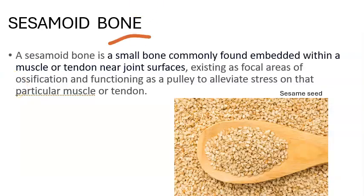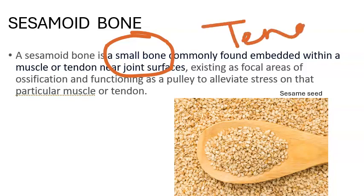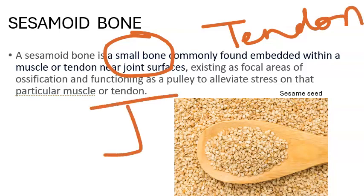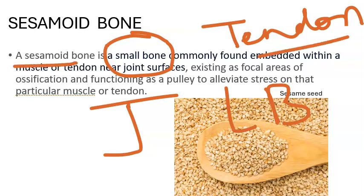What is a sesamoid bone? It is a small bone found in the tendon, especially at a joint — at the end of a long bone. So in that joint, in the tendon, you will find this small bone, which is called the sesamoid bone.